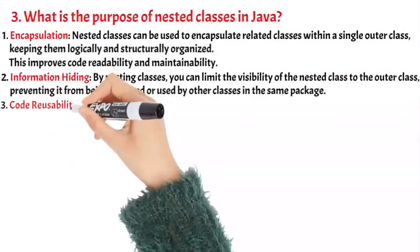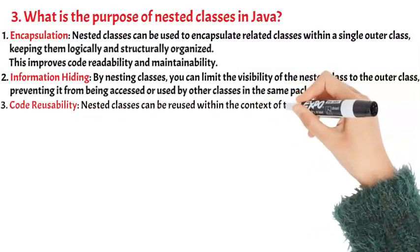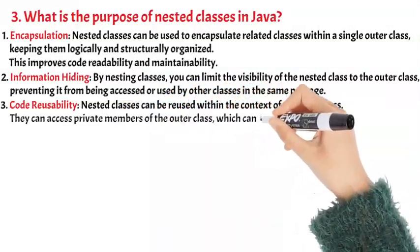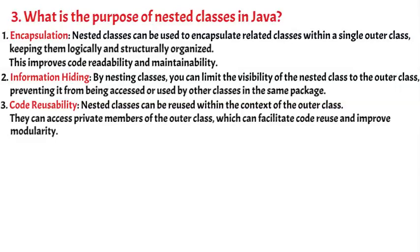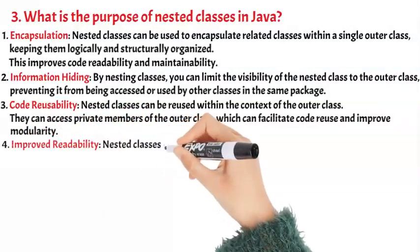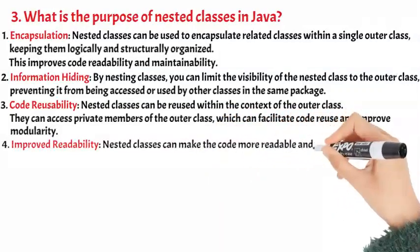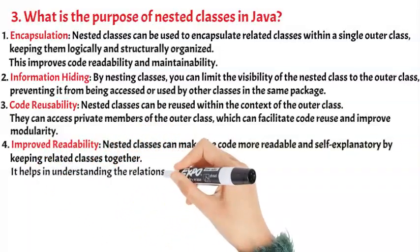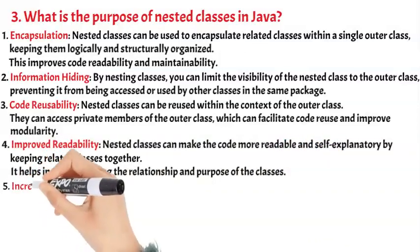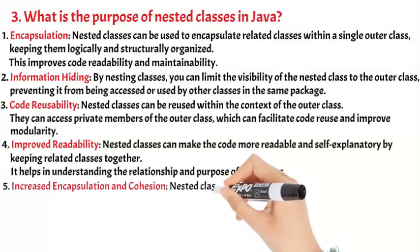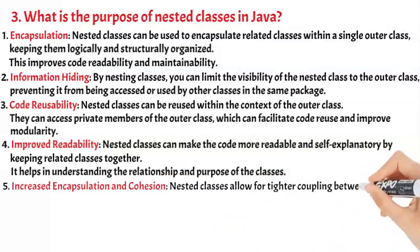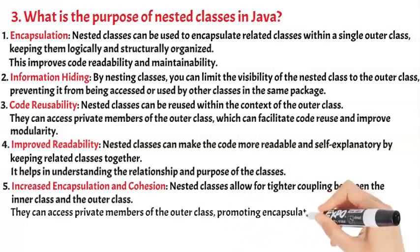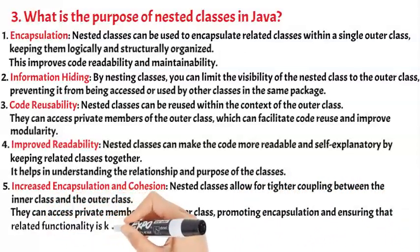3. Code Reusability: Nested classes can be reused within the context of the outer class. They can access private members of the outer class, which can facilitate code reuse and improve modularity. 4. Improved Readability: Nested classes can make the code more readable and self-explanatory by keeping related classes together, helping in understanding the relationship and purpose of the classes. 5. Increased Encapsulation and Cohesion: Nested classes allow for tighter coupling between the inner class and the outer class, promoting encapsulation and ensuring that related functionality is kept together.